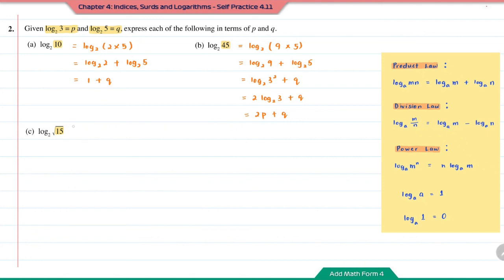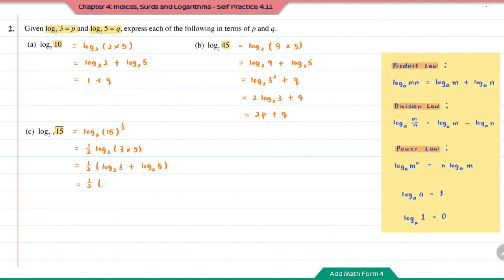Question C: log base 2 of square root of 15. First, write the square root in index form as the power of 1 over 2. Using the power law, move the 1 over 2 to the front. Write 15 as 3 times 5. Using the product law, this is 1 over 2 times log base 2 of 3 plus log base 2 of 5. Since log base 2 of 3 is p and log base 2 of 5 is q, expanding gives the answer 1 over 2 times p plus 1 over 2 times q.